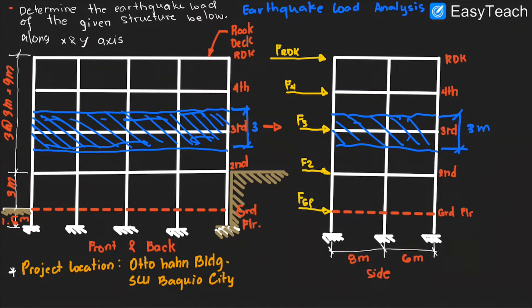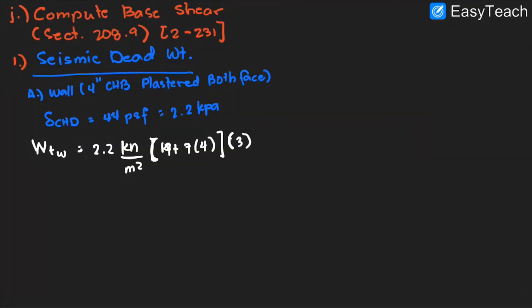The tributary width is 3 meters, and that is the height of the wall. Simplifying, the weight of the wall is now equal to 277.2 kilonewton, which we round up to 278 kilonewton — slightly over-designed but not by much, so the weight of the wall is 278 kilonewton.